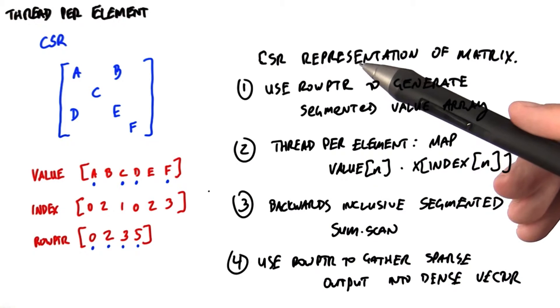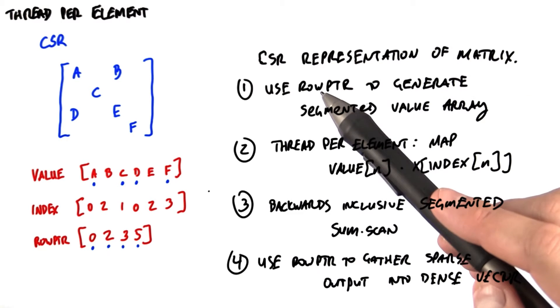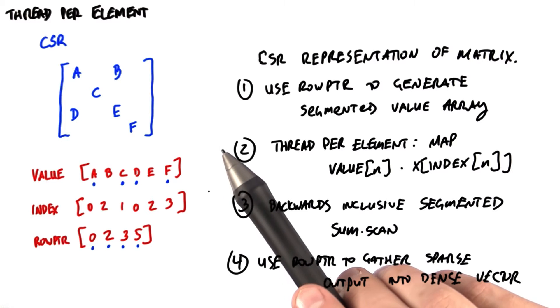And then finally, the output of that sum scan will be a sparse vector, which we might want to pack back into a dense vector. And we can use the row pointer addresses to gather that sparse vector back into the dense vector.